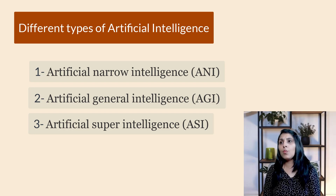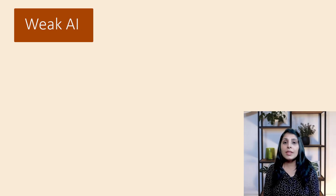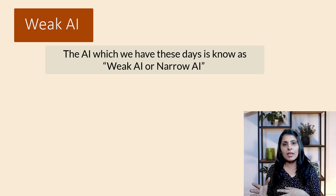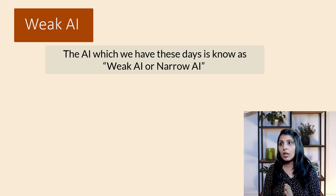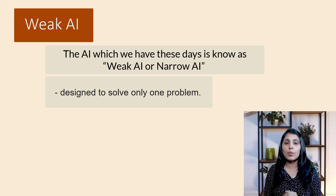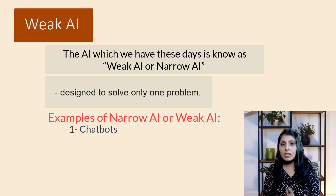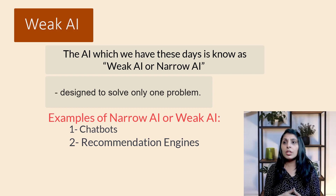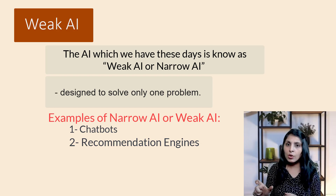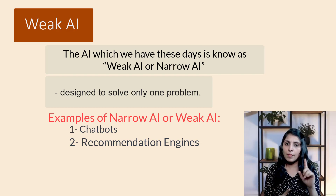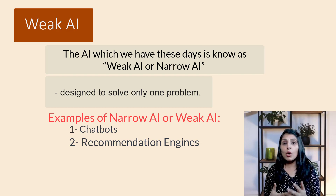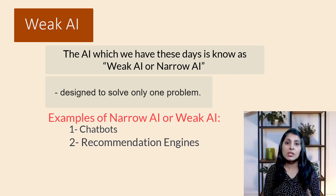Let's begin with weak AI, which is also known as narrow AI. The AI which we are using these days is called weak AI. Weak AI refers to an AI program designed to solve only one problem. For example, chatbots can only handle conversations. Similarly, recommendation engines — companies like Amazon, Spotify, and Netflix — use narrow AI algorithms, which are algorithms designed to perform one task.